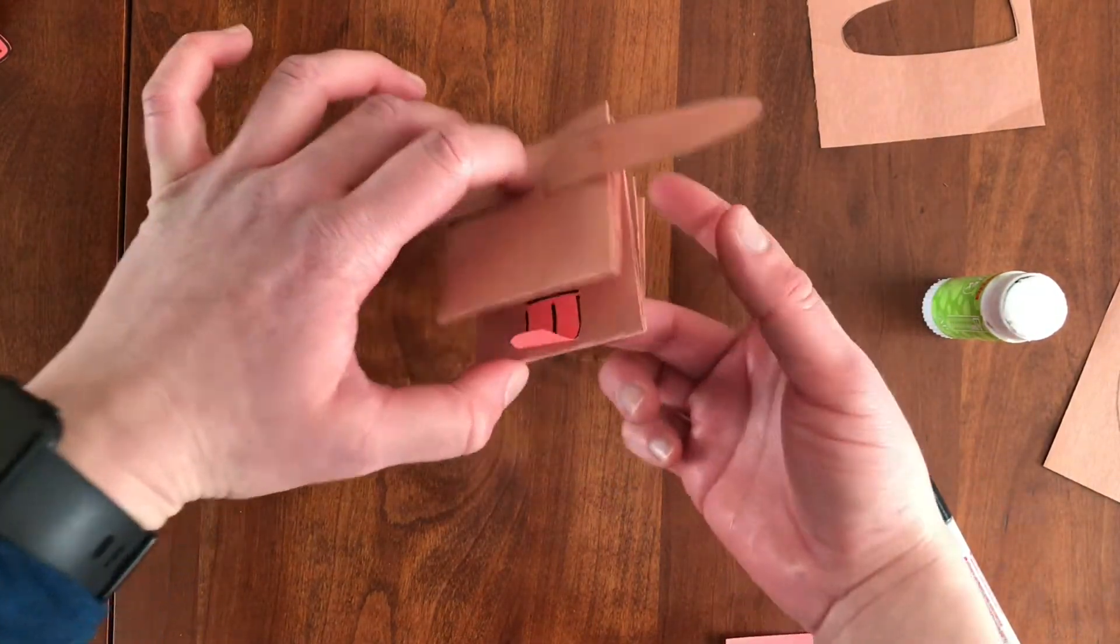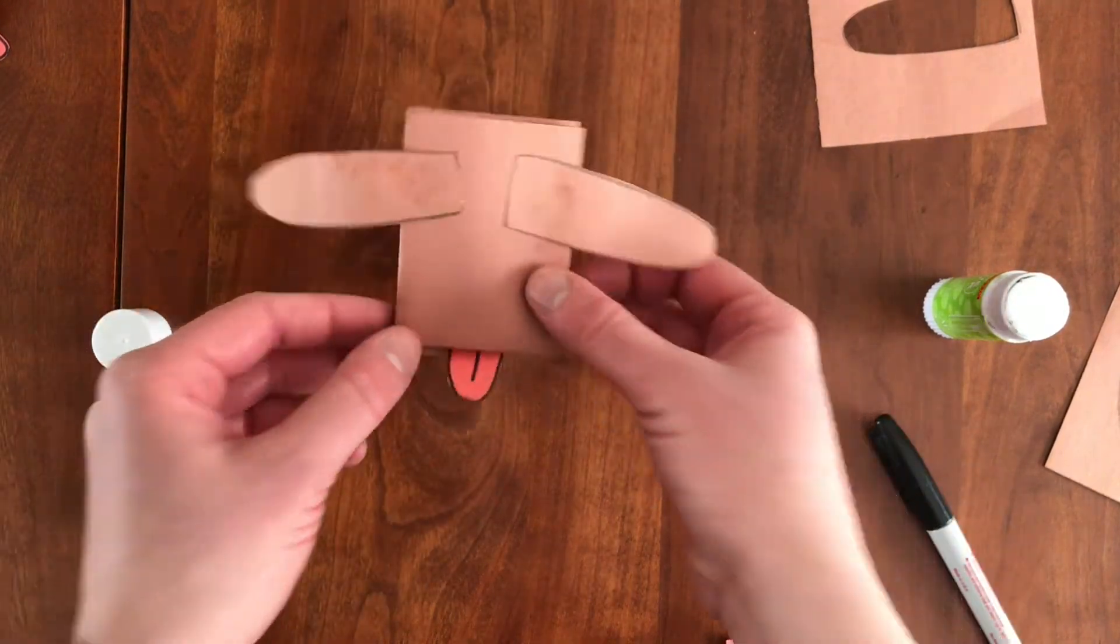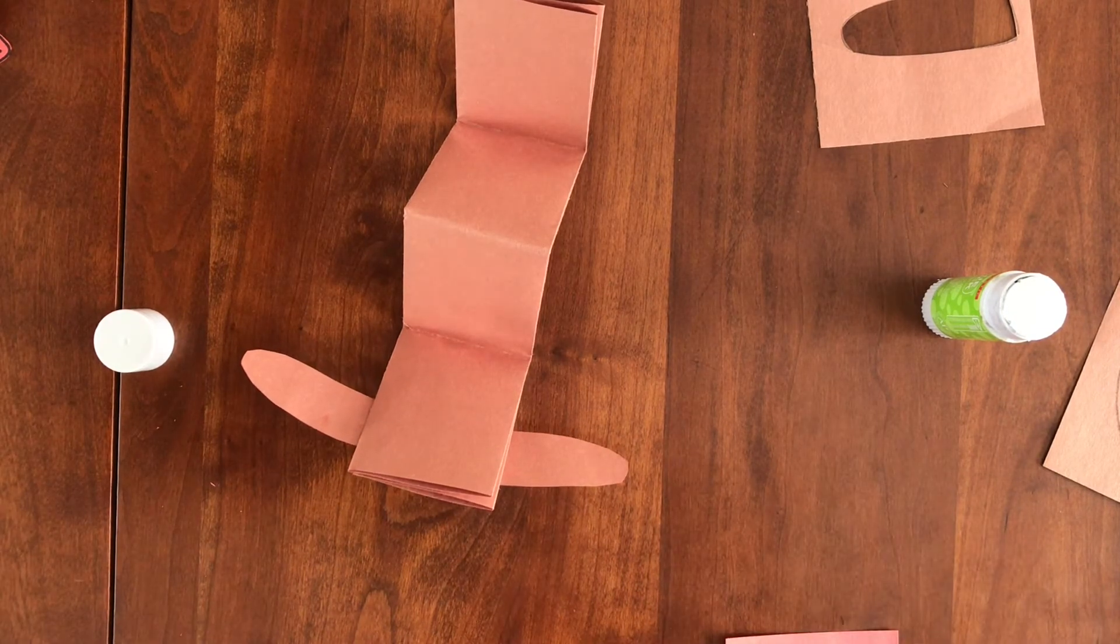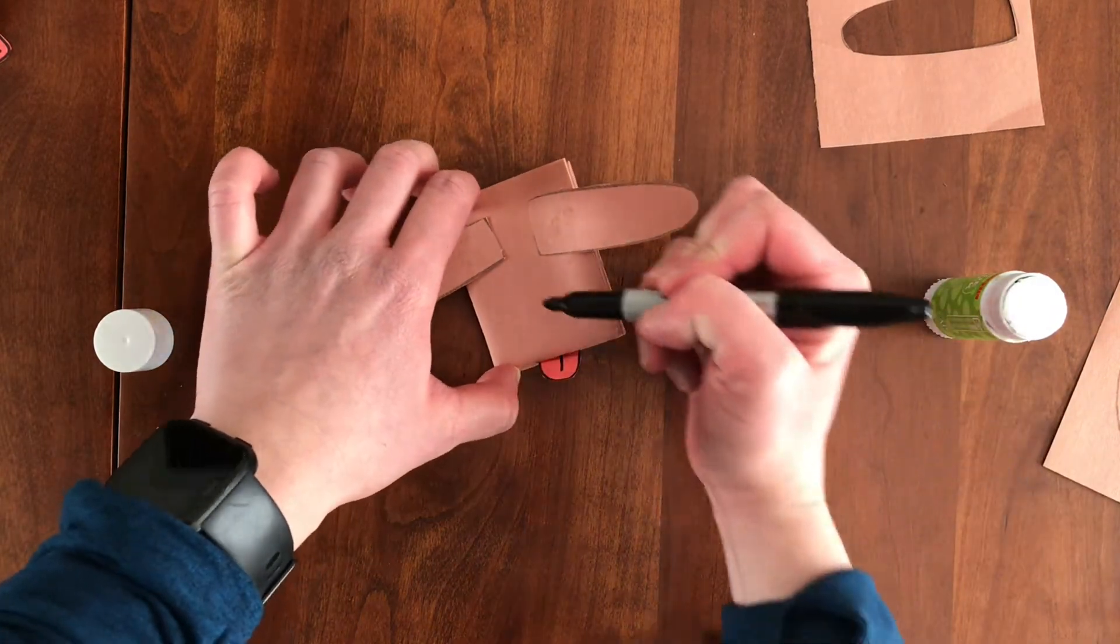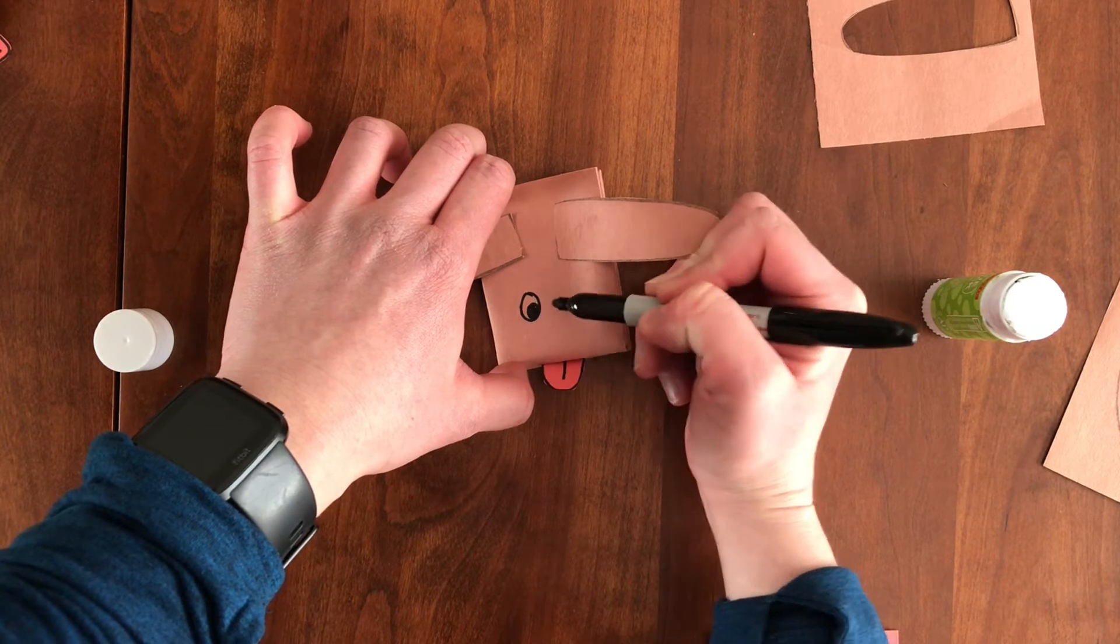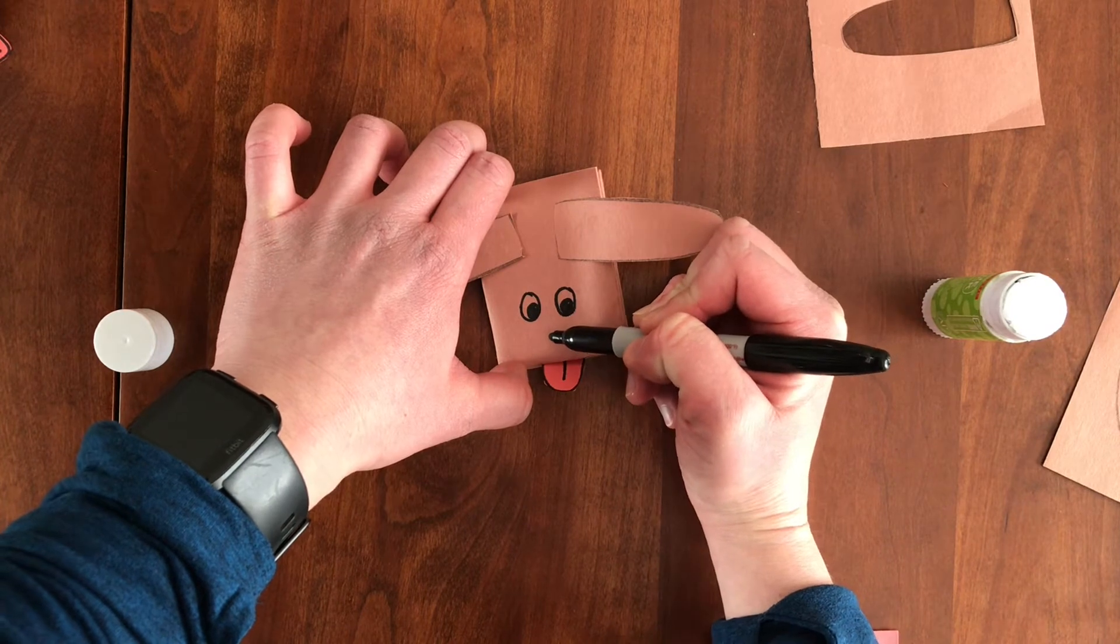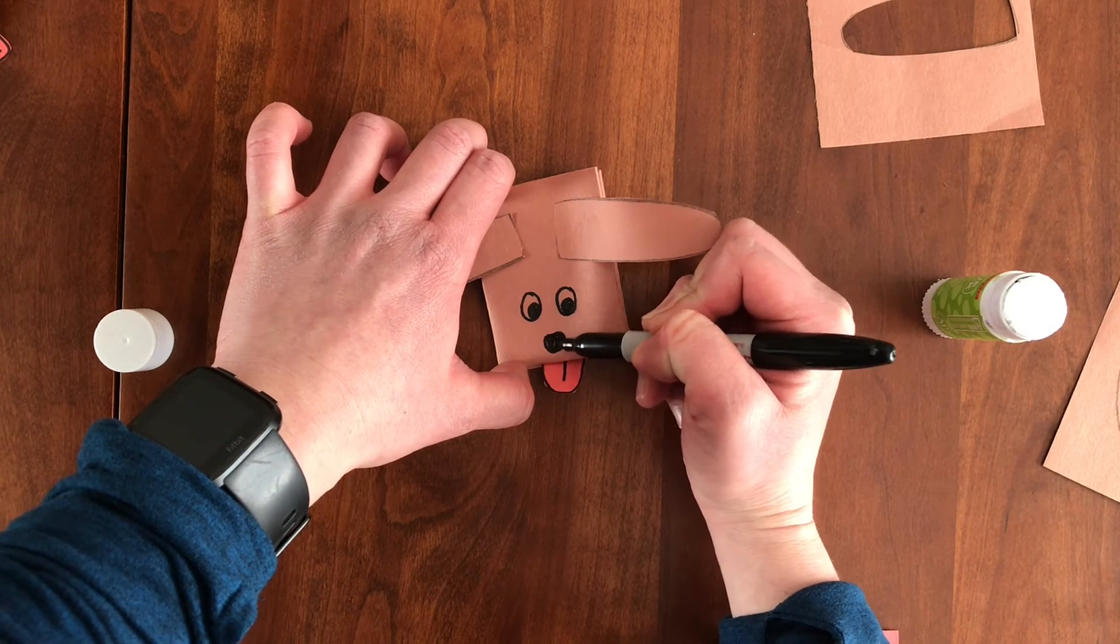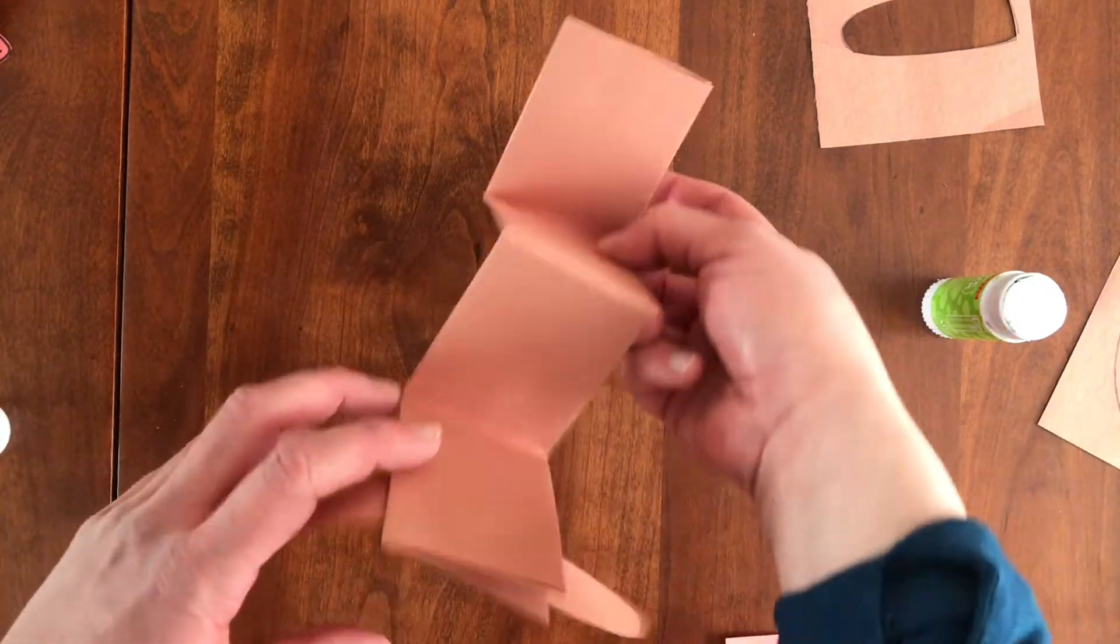All right, we're almost done. We have one step left to do. So I've got the tongue. I've got the ears. Now I need to grab my marker and I'm going to add his face. So puppy, I'm going to draw two eyes and a cute little black nose. And there you have it. That's puppy the puppet.